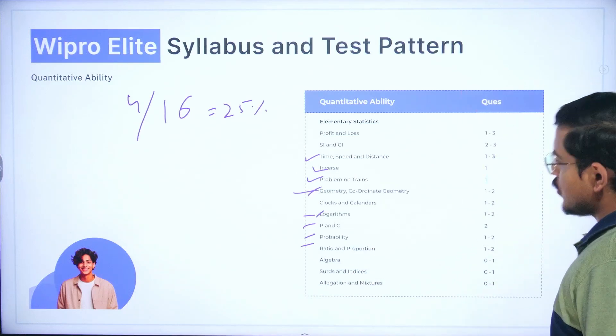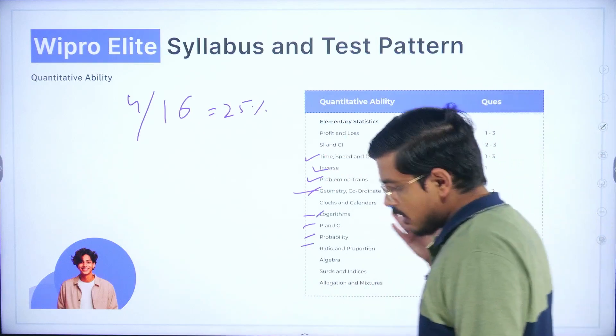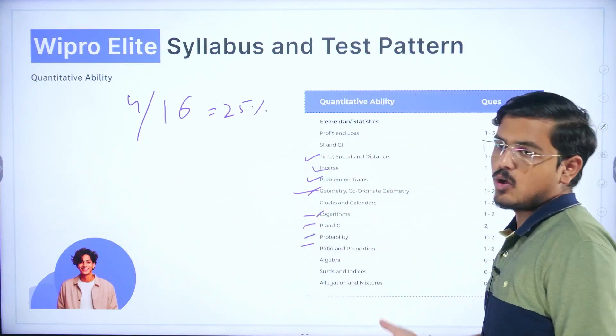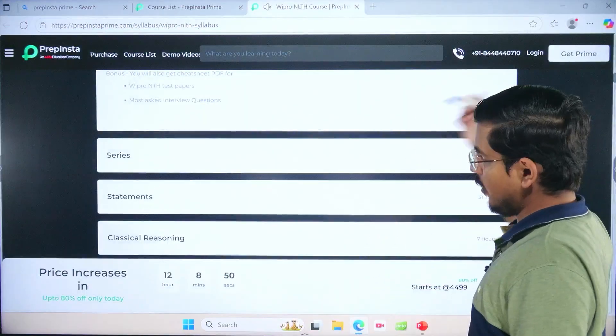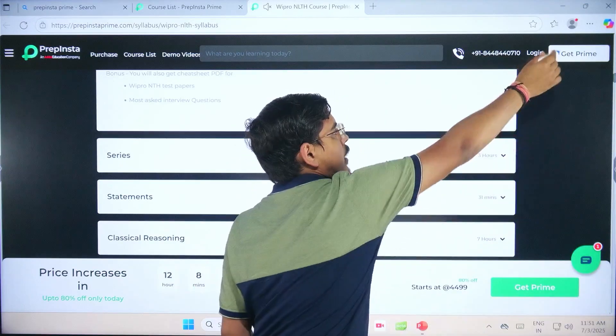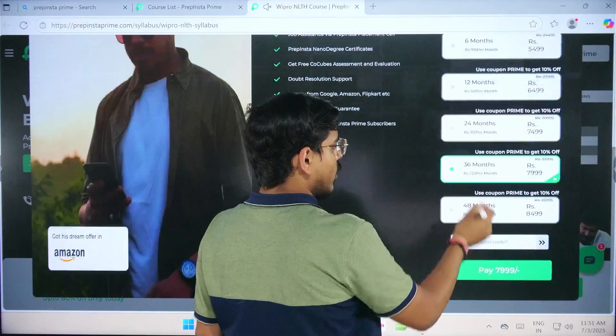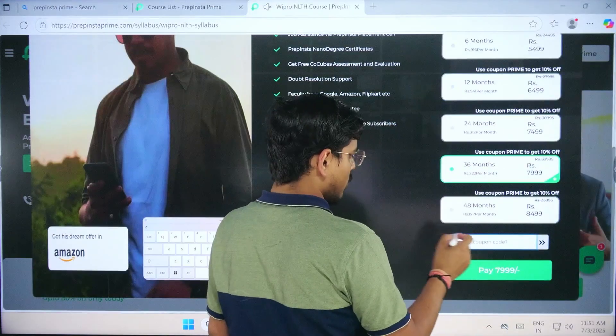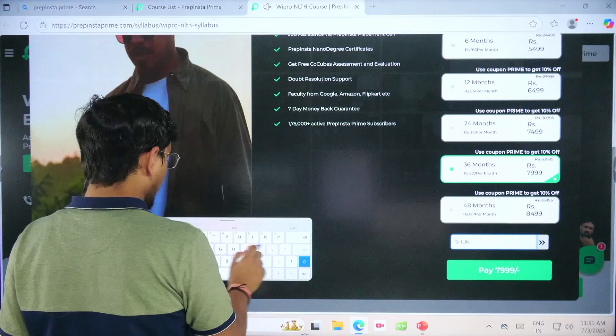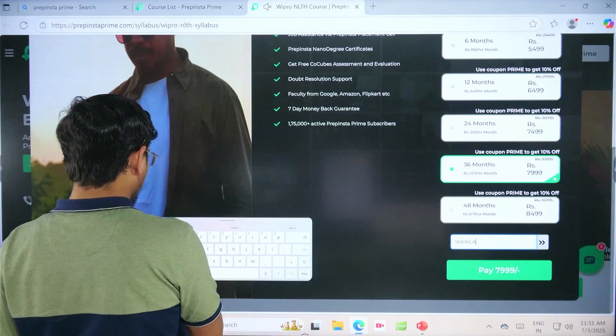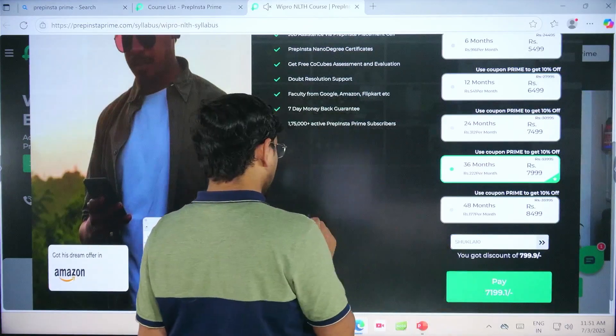All those topics that you're seeing here would be covered there in detailed manner with previous year questions being solved every time. All those people who want to enroll here, all you need to do is simply click on get prime and with this particular course if you enroll into this you are getting subscription to 200 plus courses. You put out this coupon code Shukla10 and you will immediately get some discount here.